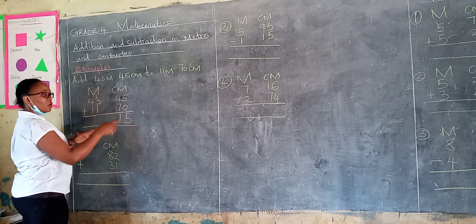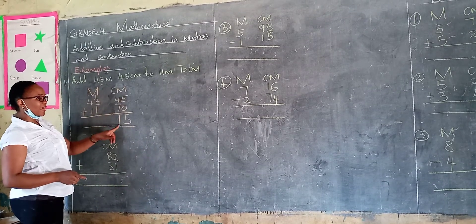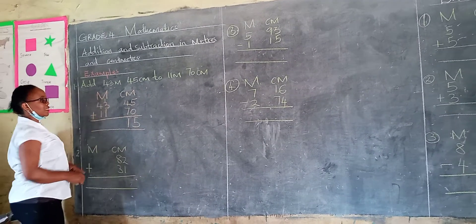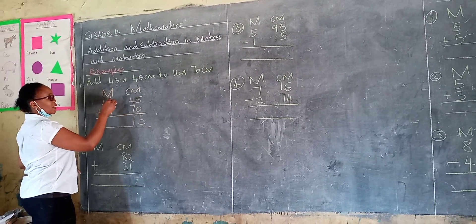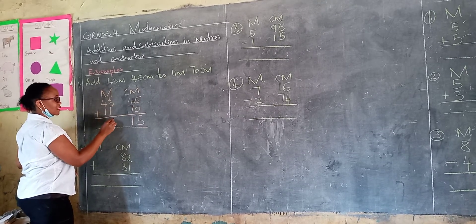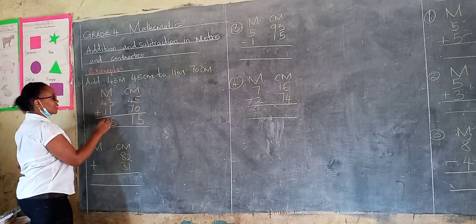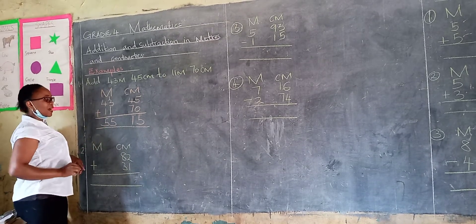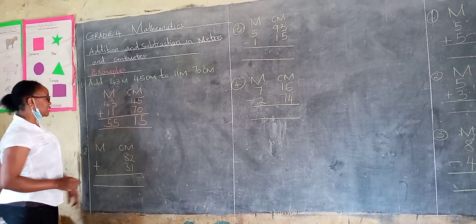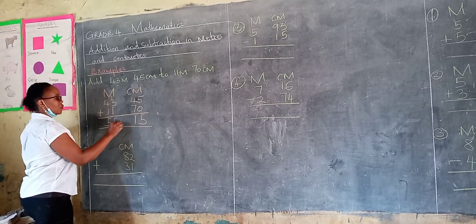So we just carry one to the other side, so that more than 100 you take away. You take it to the side of meters. So let's add together. 1 plus 3 is 4, 4 plus 1 is 5. Then 4 plus 1 is 5. So that is our answer, learner. 55 meters 15 centimeters.